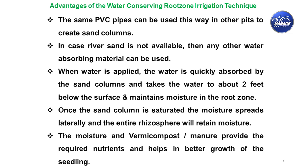Where river sand is not available, any other water-absorbing material can be used. IARI has come out with a hydrogel called PUSA gel — a water-absorbing gel — or we can use rice husk, vermicompost, cow dung, M-sand, or similar materials. As explained in the video, once water is applied, it goes down up to two feet, and with additional holes, up to three feet.